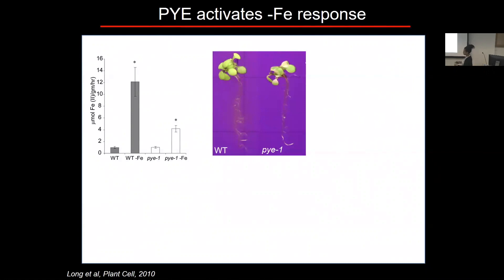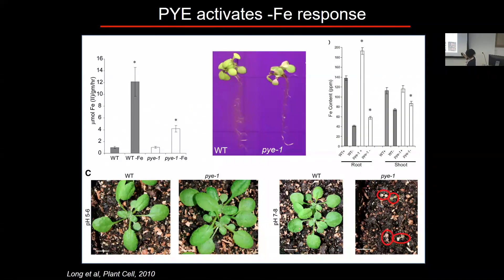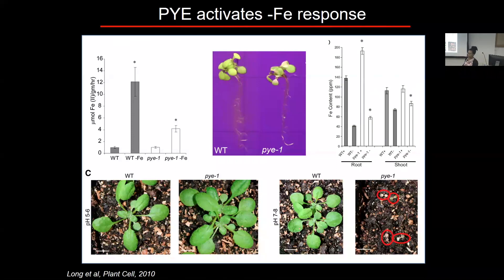When we grow a Popeye mutant at pH 5 to 6, it grows fairly well, but when grown at elevated pH where iron is poorly biologically available, the plants will germinate but won't progress beyond germination — showing decreased tolerance to iron deficiency. However, surprisingly, Popeye mutants exhibit an increase in the amount of iron both in the root and the shoot. This suggests a disconnect between the ability to uptake iron and the ability to sense and utilize that iron.